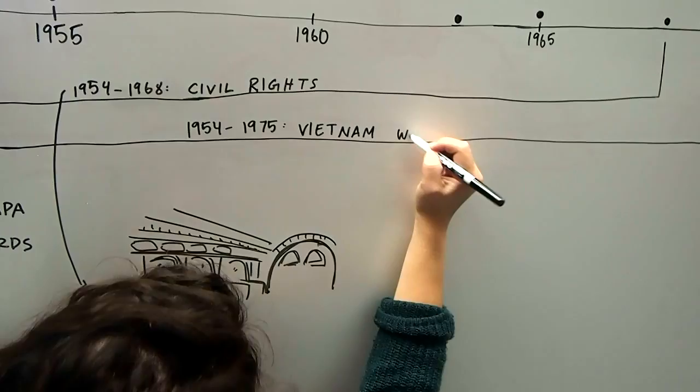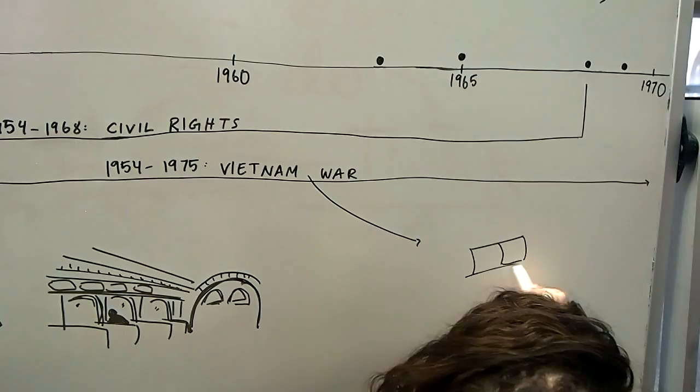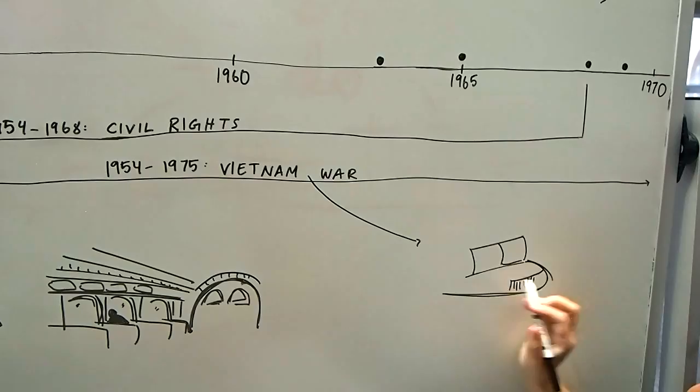Simultaneous to the Civil Rights Movement, the war in Vietnam raged in Southeast Asia. The war provoked anti-war activism in the U.S. and also increased visibility of the psychological impacts of war observed in returning veterans.